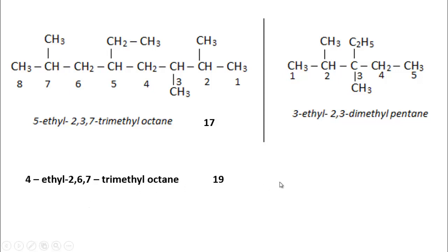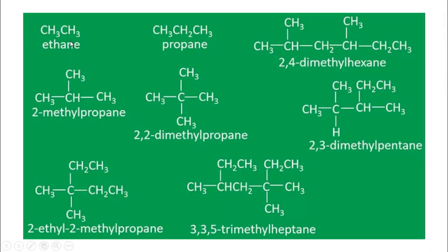Now follow more examples. For a linear chain, for example 2,4-dimethylhexane: there are 6 carbons in the longest chain — hexane. Numbering starts from the side where substitution is nearest: from this side it is the second carbon, from the other side it would be the third carbon, so numbering starts from this side — giving 2,4-dimethylhexane. Another example: this is propane with 3 carbons. From both sides the second carbon has a methyl substitution, so this is 2-methylpropane. And for 2,2-dimethylpropane: the longest chain is propane with 3 carbons, but in the second carbon there are two methyl groups substituted, so we write 2,2-dimethylpropane.